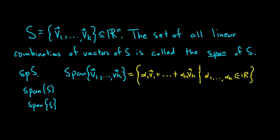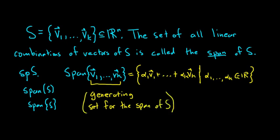These vectors here, sometimes these have a name. Sometimes they're called a generating set. So this is a generating set for the span of S. So it generates the entire set. If you look at all linear combinations of these vectors, you get the span of S.